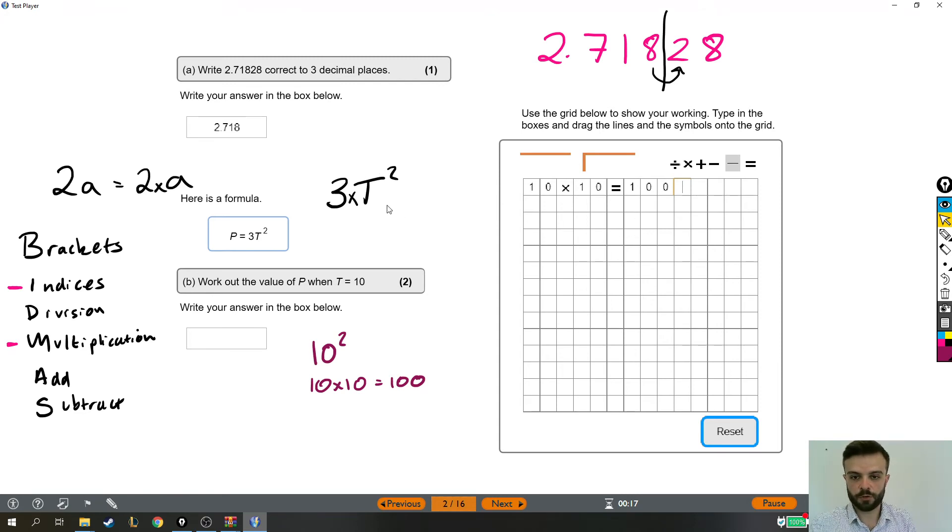And then, now we've got what T squared is. We know that this T squared is actually 100. We can do 3 times 100. And again, we go back to the working out box because we've got to show all our working out. 3 times 100 equals 300. And that's the answer, 300.